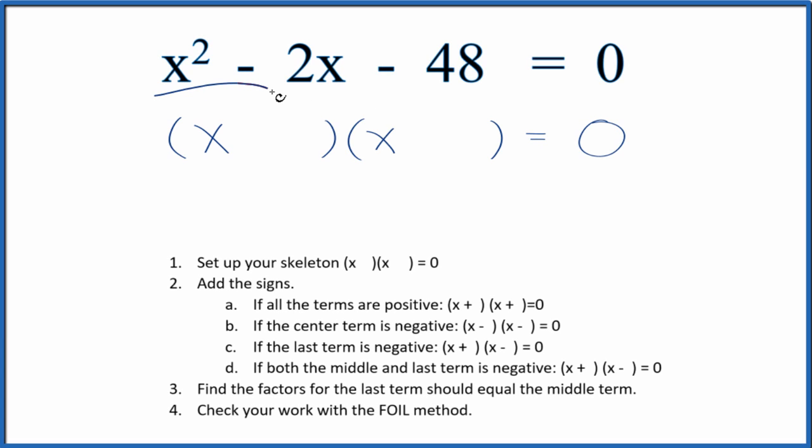Let's factor this equation. We have x squared minus 2x minus 48 equals zero. We're going to factor it by finding common factors for 48 and figure out this middle term.